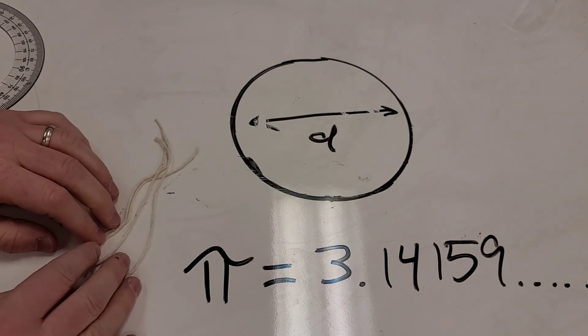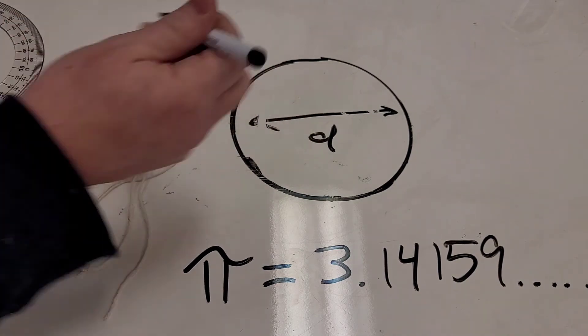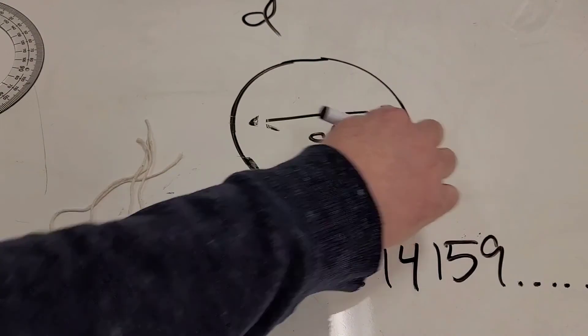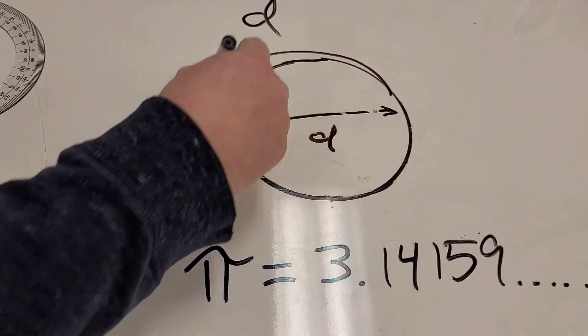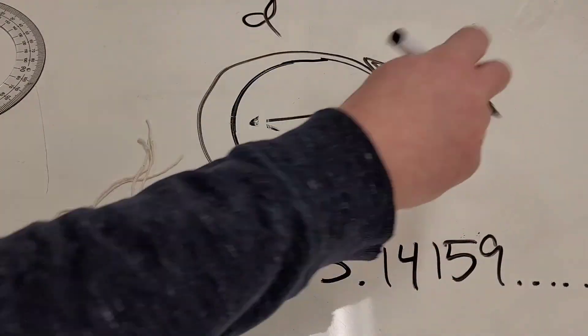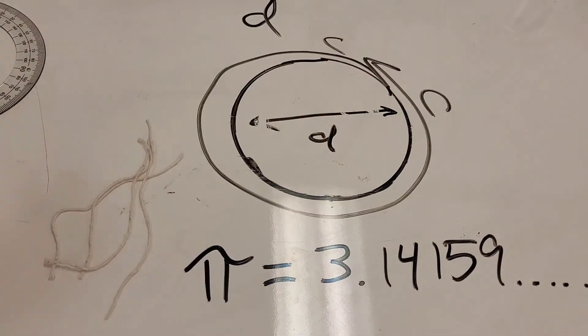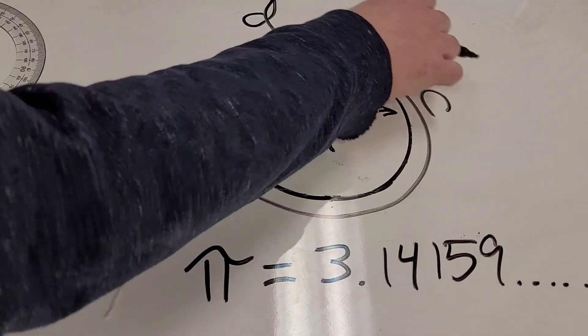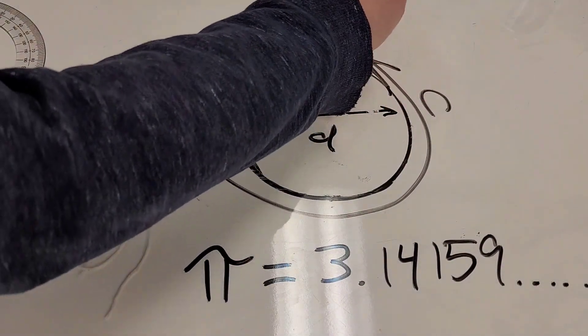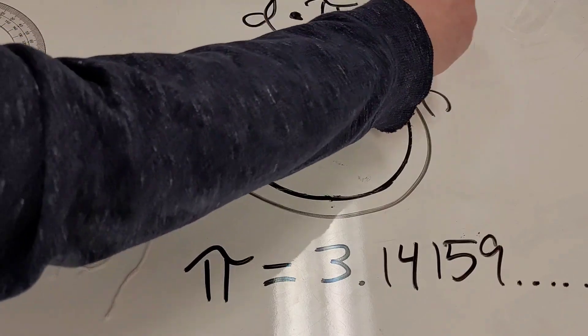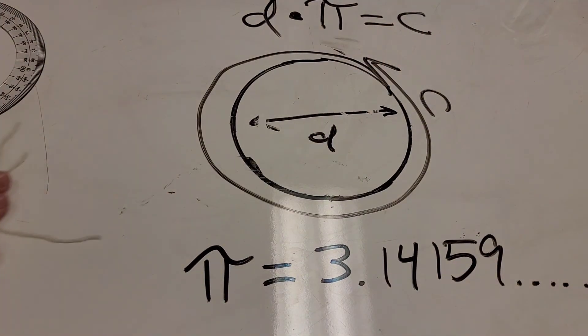The circumference is the distance around, so if we do diameter times pi, we will always get the circumference. I hope that helps. I hope that instills some curiosity, and happy Pi Day everyone.